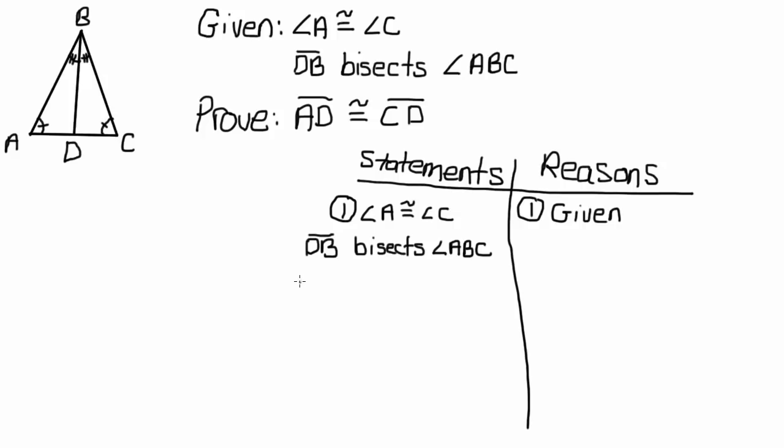So that actually can be our next step. Angle ABD is congruent to angle CBD, and the reason for that is definition of angle bisector. And you can do some abbreviations. Always check with your teacher. They might have certain things they require, so you always do what they say. But what I would say is you can just write def for definition, and angle you can just draw an angle.